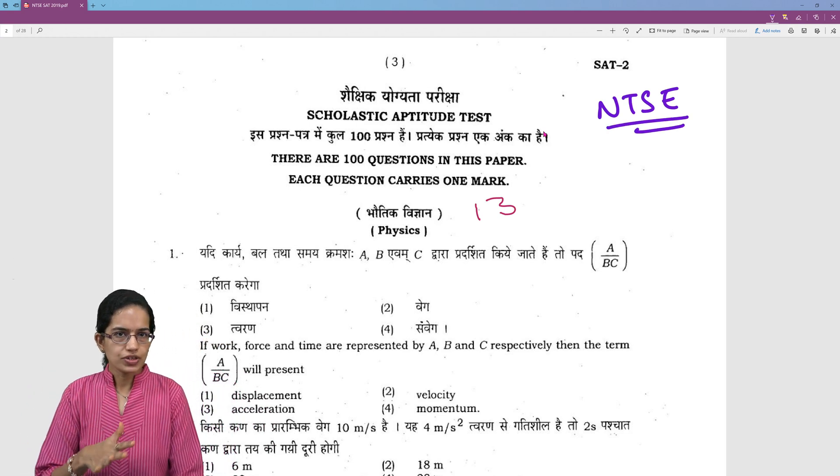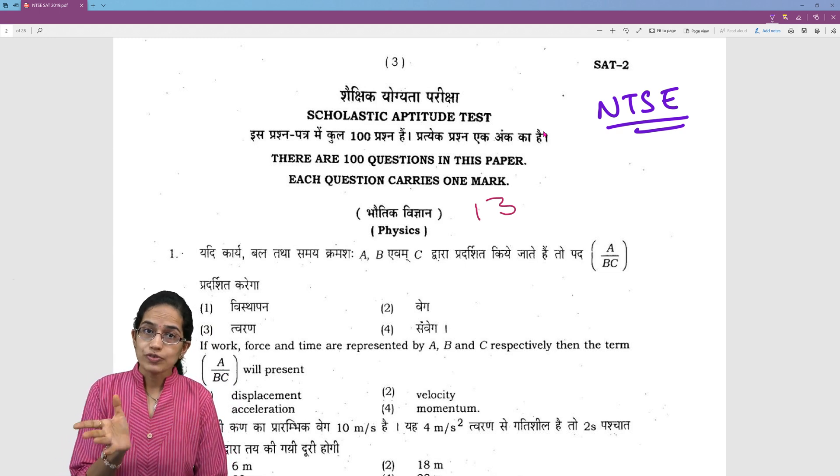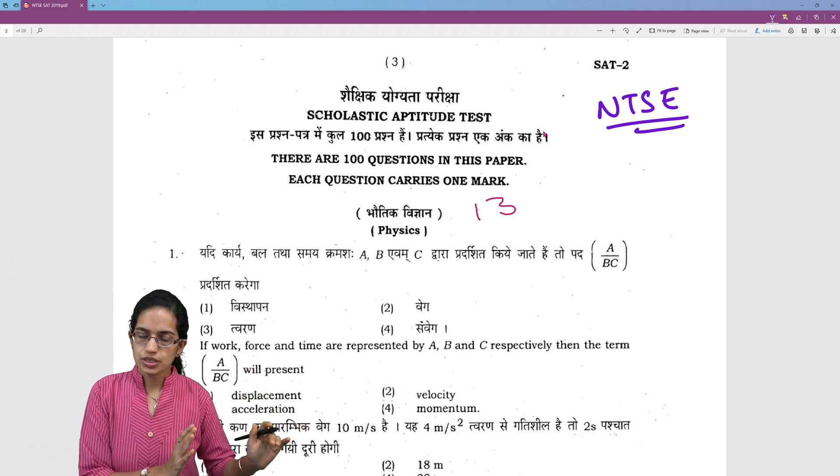Physics, chemistry - you would have 13 questions, 7-7 from botany, zoology, and then you would have 20 questions from mathematics and then the remaining questions from your social studies.